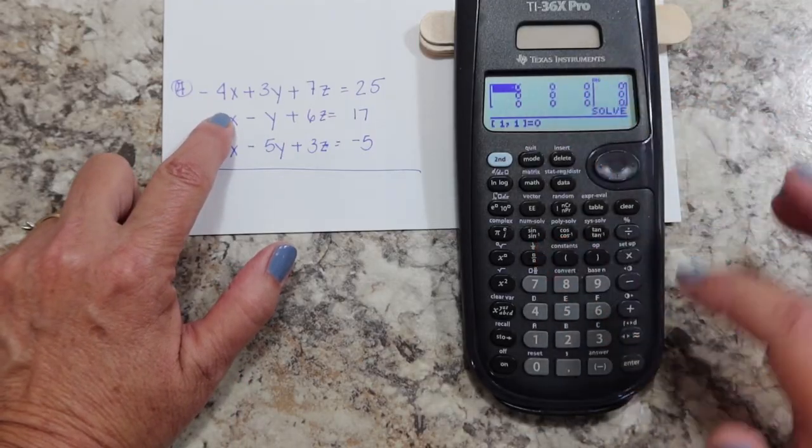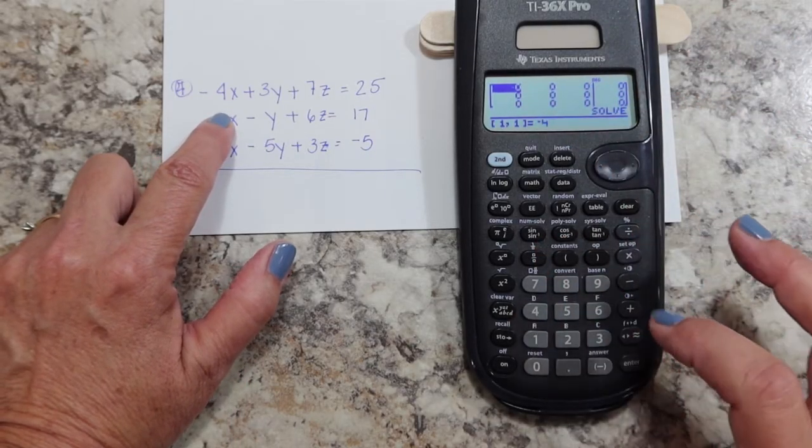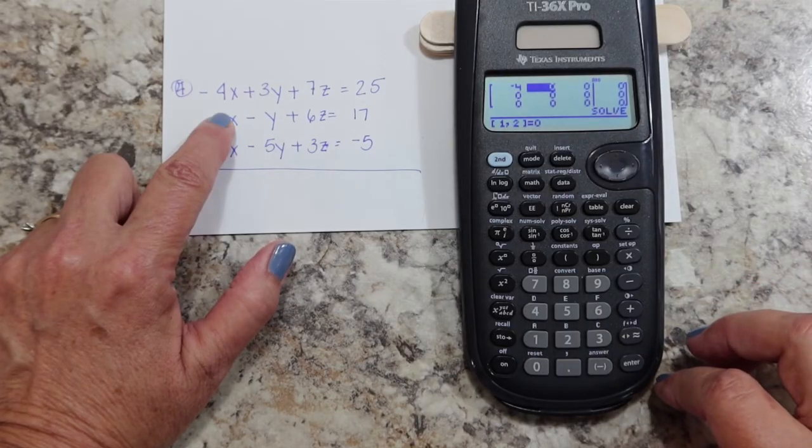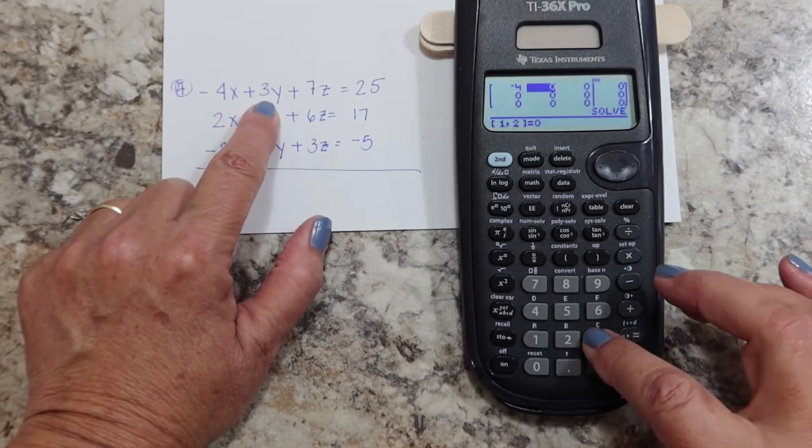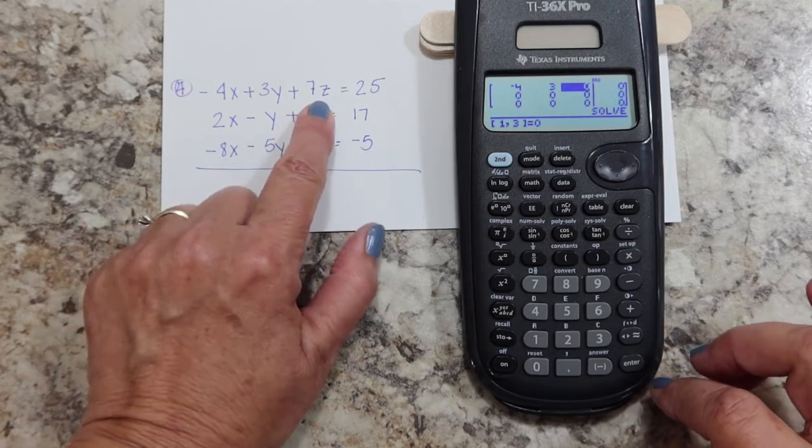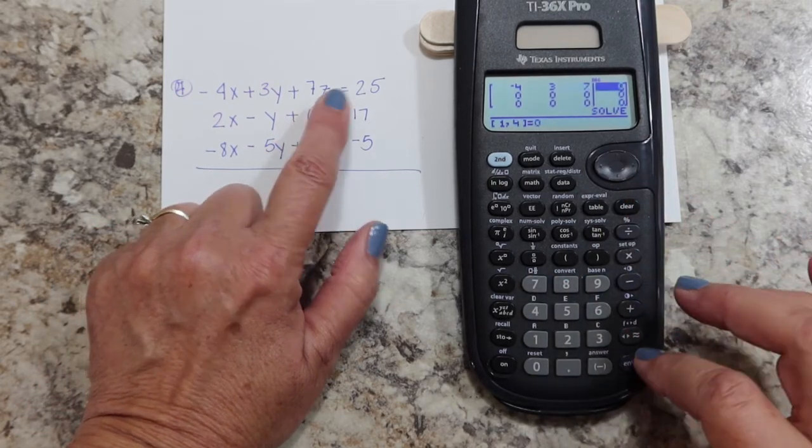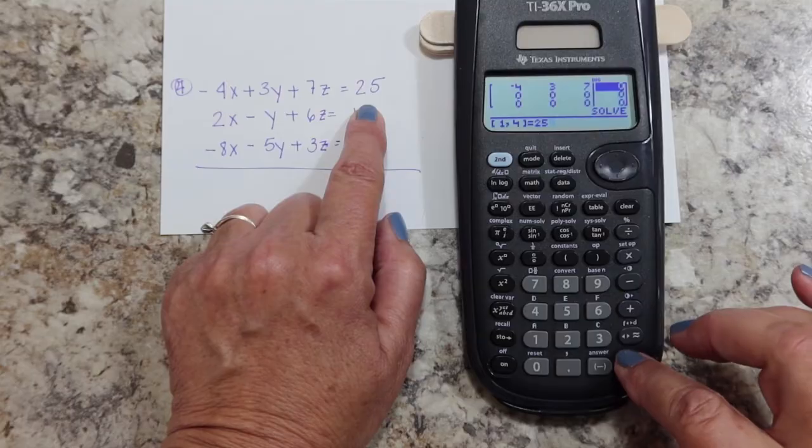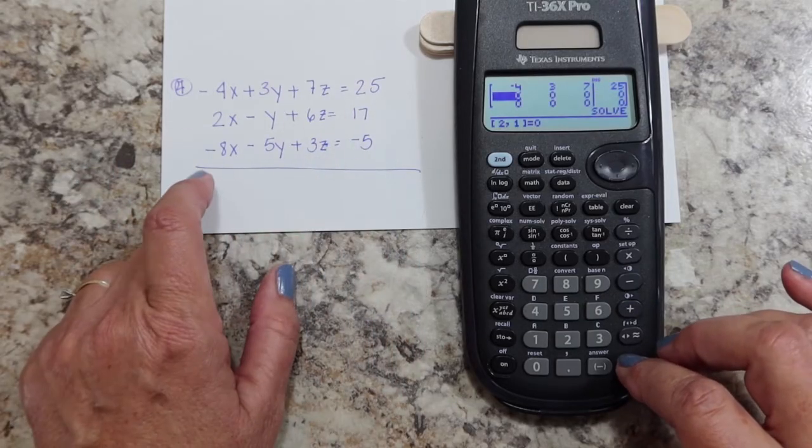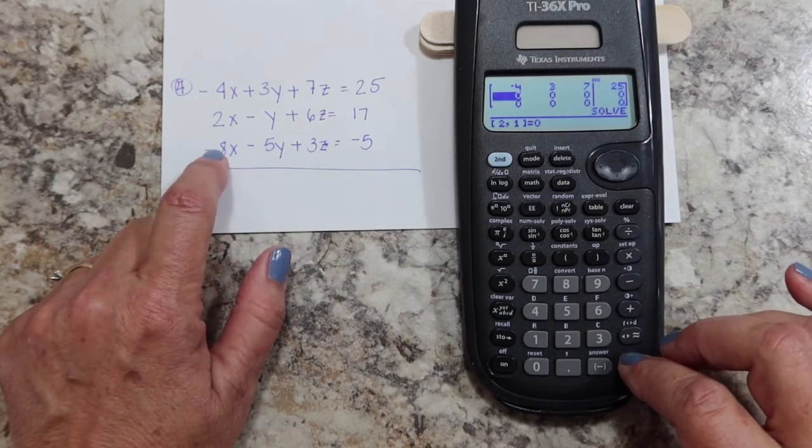Alright, our first coefficient is negative four, enter. Our second coefficient is three, enter. And our last coefficient is seven, enter. The constant is 25.